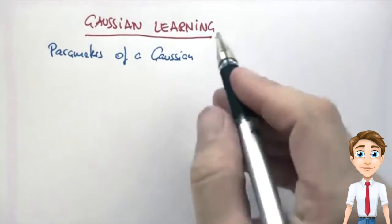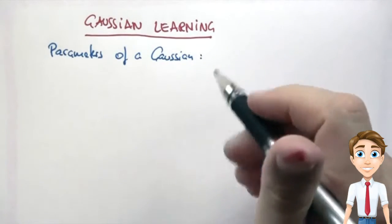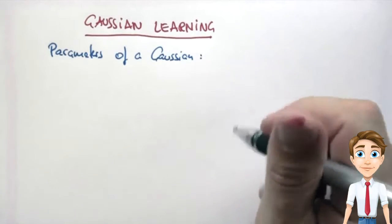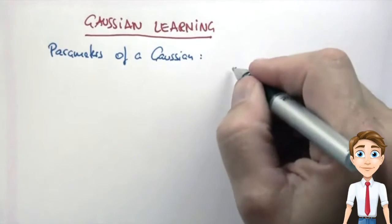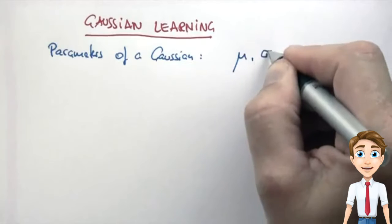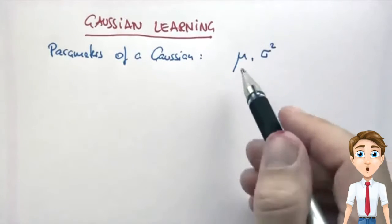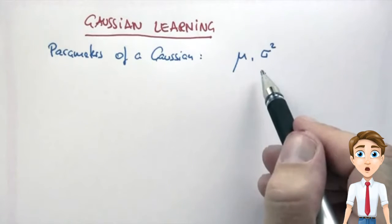Now to explain this, let me first tell you what parameters characterize a Gaussian. In the one-dimensional case it is mu and sigma squared. Mu is the mean, and sigma squared is called the variance.